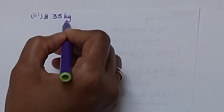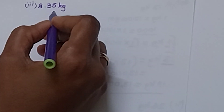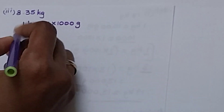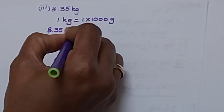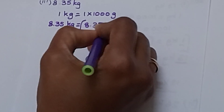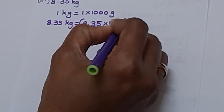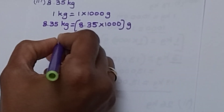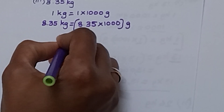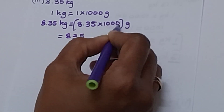Third one: 8.35 kilograms. We write the formula — 1 kilogram equals to 1 into 1000 grams. So 8.35 kilograms equals to 8.35 into 1000 grams. First, we write the digits as they are without the decimal: 8, 3, 5, and then 3 zeros.